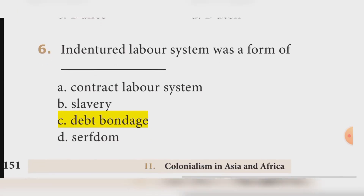Question six: The indentured labor system was a form of debt bondage. Answer: Option B — Debt bondage.